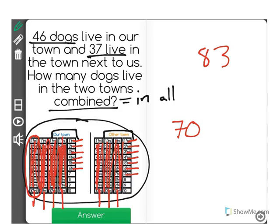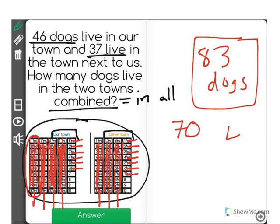There are a total of 83 dogs in the two towns. And basically what we did there is we took the 46 dogs from our town, we added the 37 dogs from the other town to get our total of 83.